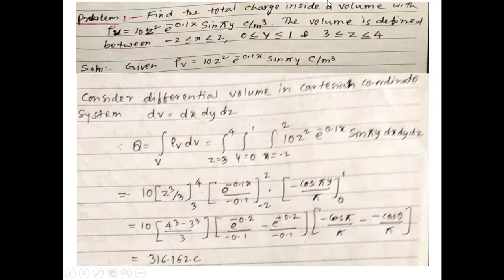Next problem: for total charge with volume charge density rho-V = 10z² e^(−0.1x) sin(y) coulomb per meter cube, over the volume defined by x: −2 to 2, y: 0 to 1, z: 3 to 4. Using Q = ∫∫∫ rho-V dV in Cartesian coordinates where dV = dx dy dz, applying the limits and integrating, we get Q = 316.162 coulomb.